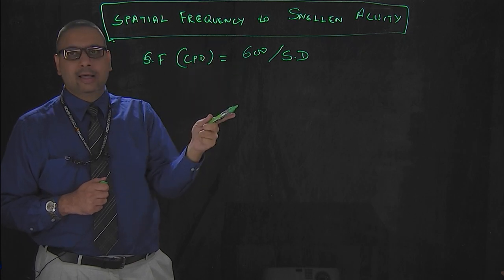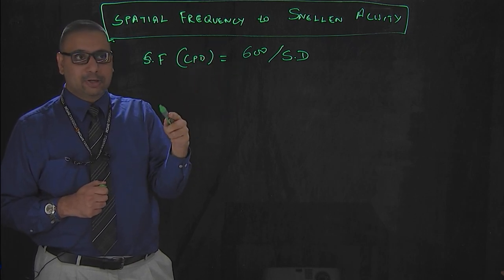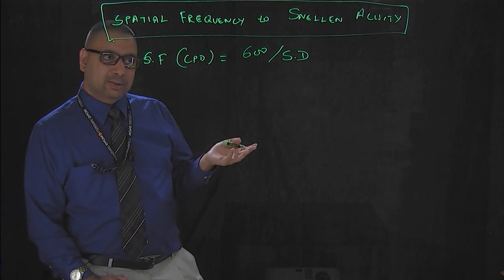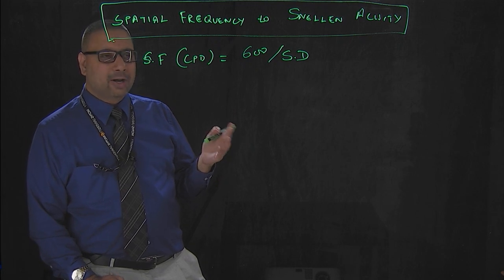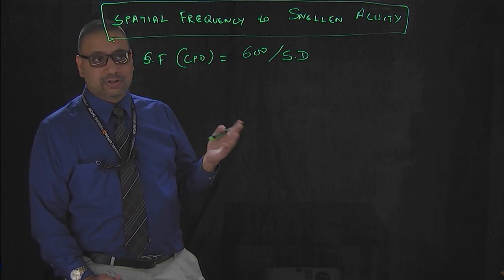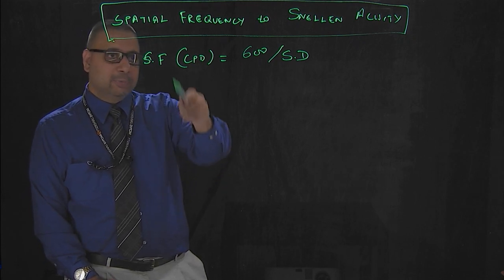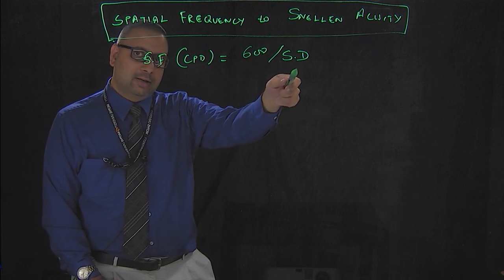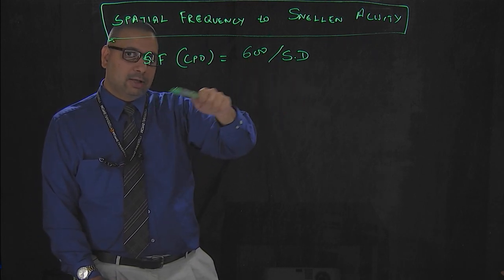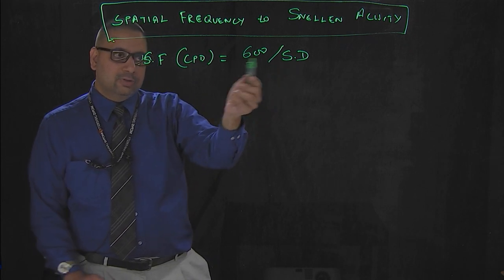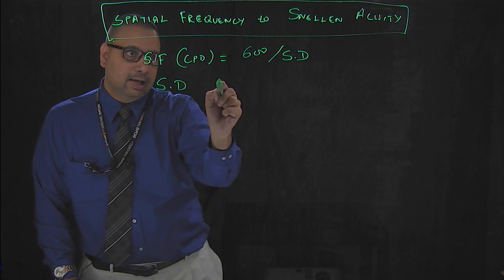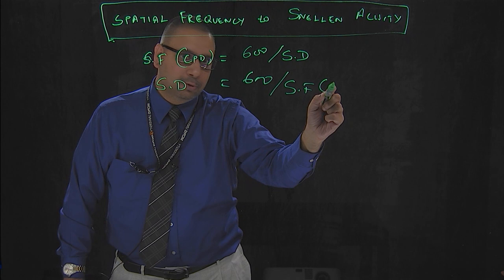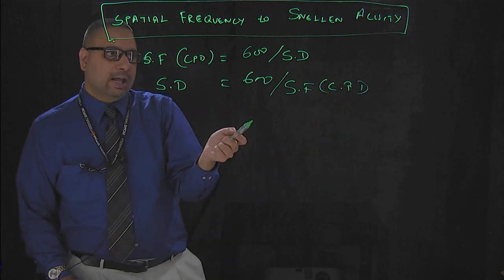This covers converting spatial frequency to Snellen acuity and back. Vision science textbooks often give values in cycles per degree, so you want to know the approximate Snellen equivalent. The formula is: spatial frequency (cycles per degree) = 600 divided by the Snellen denominator. Conversely, Snellen denominator = 600 divided by spatial frequency. Both are the same formula — if you know one, you can calculate the other.